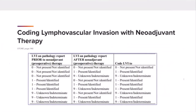For cases treated with neoadjuvant therapy, STORE instructs us to refer to the table on page 146 to code the data field. The table should be used to code the data field based on the results of LVI on the pathology report prior to neoadjuvant therapy in column 1, the results of LVI after neoadjuvant therapy in column 2, and column 3 indicates the code entered into the data field in your registry software. For example, if lymphovascular invasion was present prior to neoadjuvant therapy but not present after, the table instructs us to code the lymphovascular invasion data field to 1, present. If lymphovascular invasion is identified in any specimen before or after neoadjuvant therapy, the data field will be coded to 1, present.